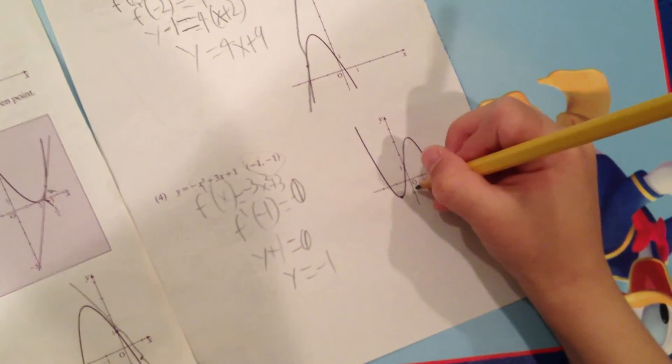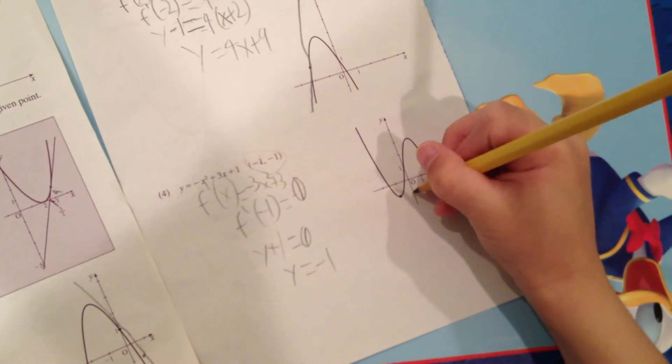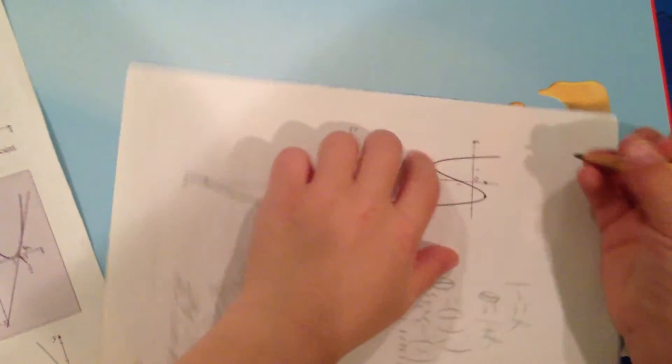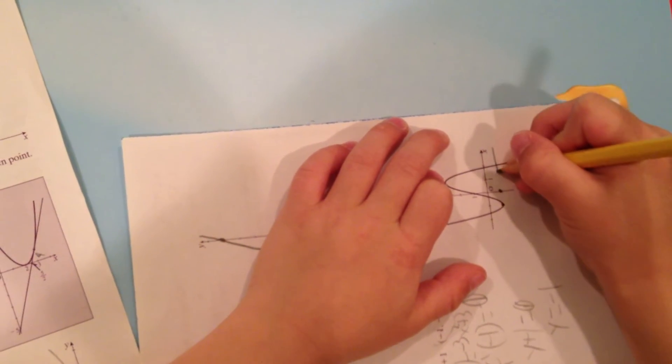And that's the tangent line. That's the y intercept. So, negative 1, and so then the line is like this.